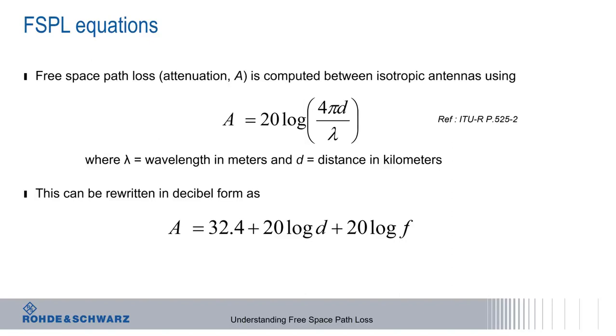As mentioned earlier, and as we can see from these equations, free space path loss is a function of only two variables, distance d and frequency f. Let's look at how each of these variables contributes to our equation.